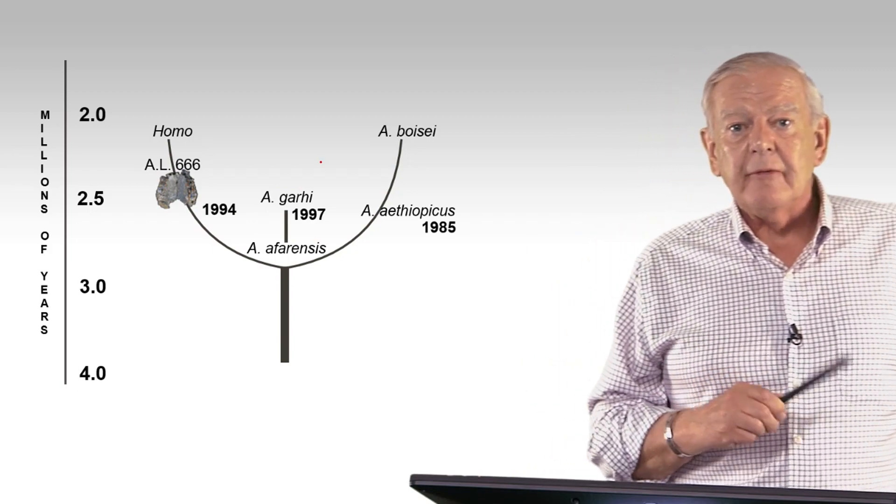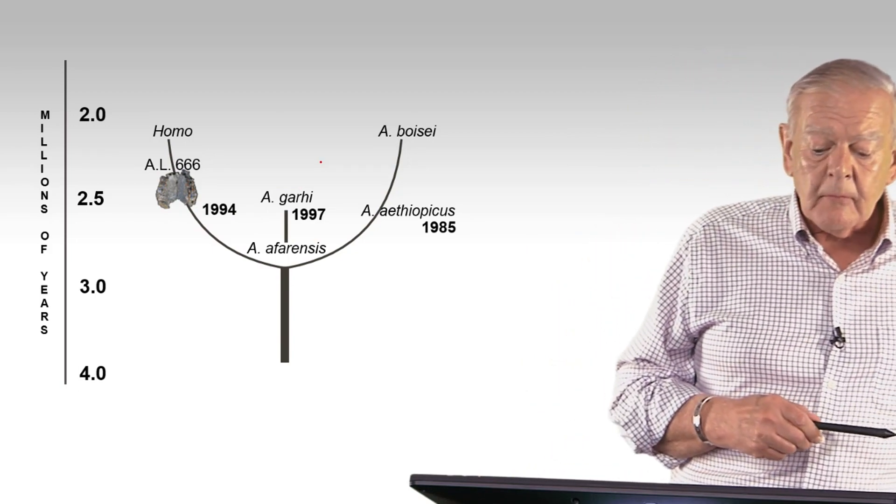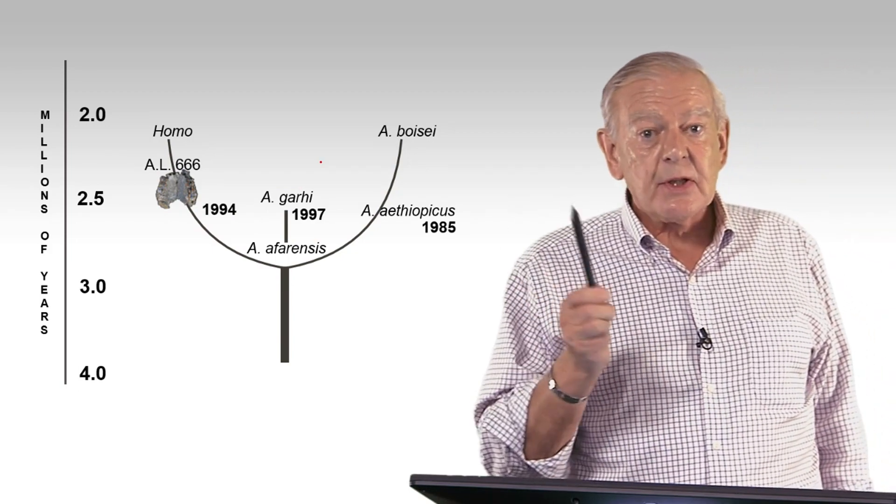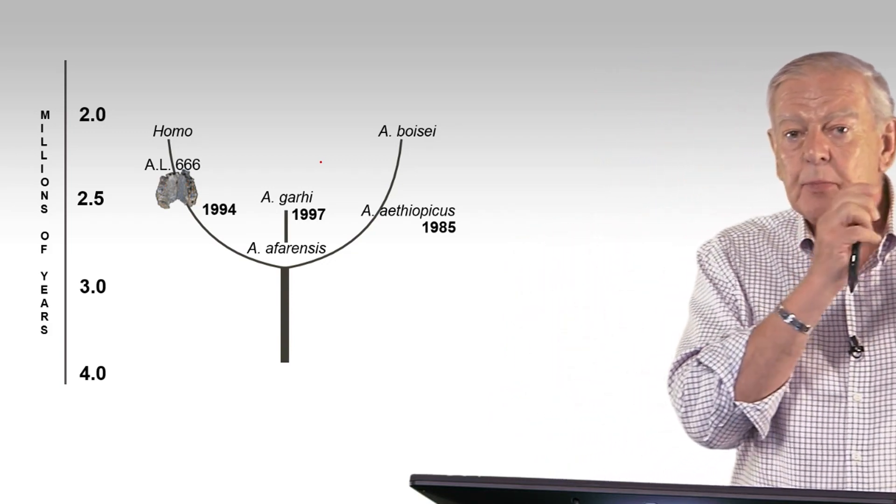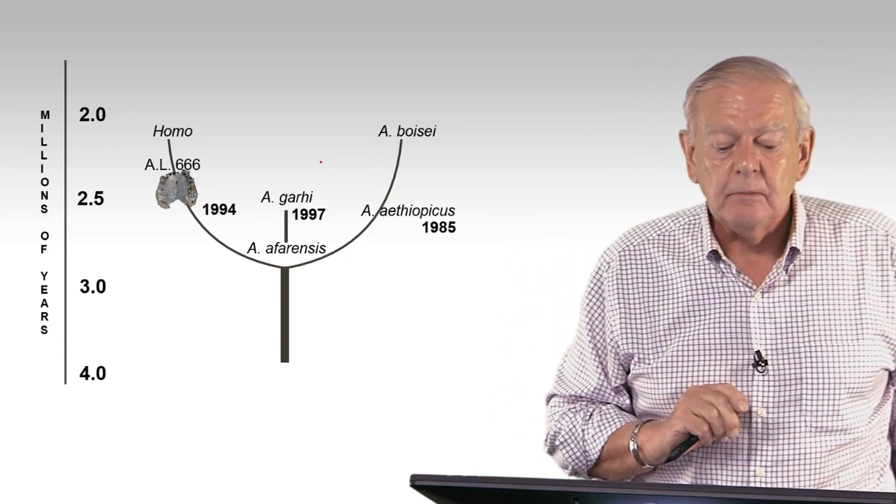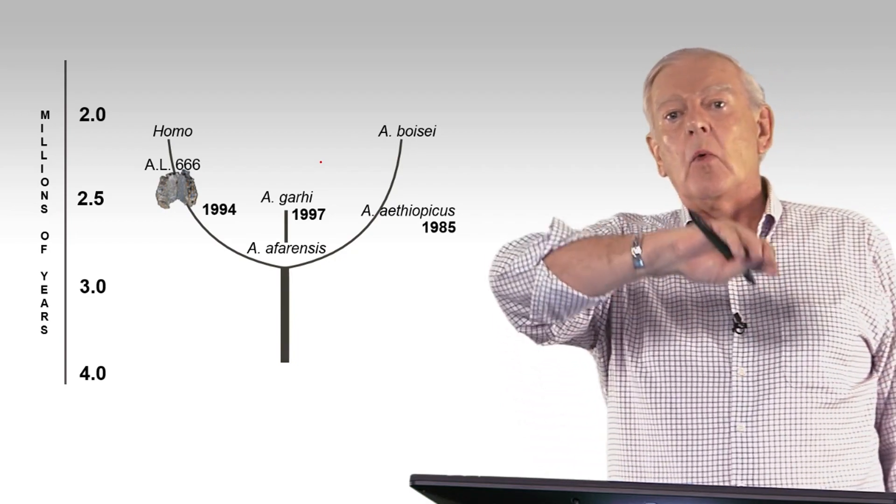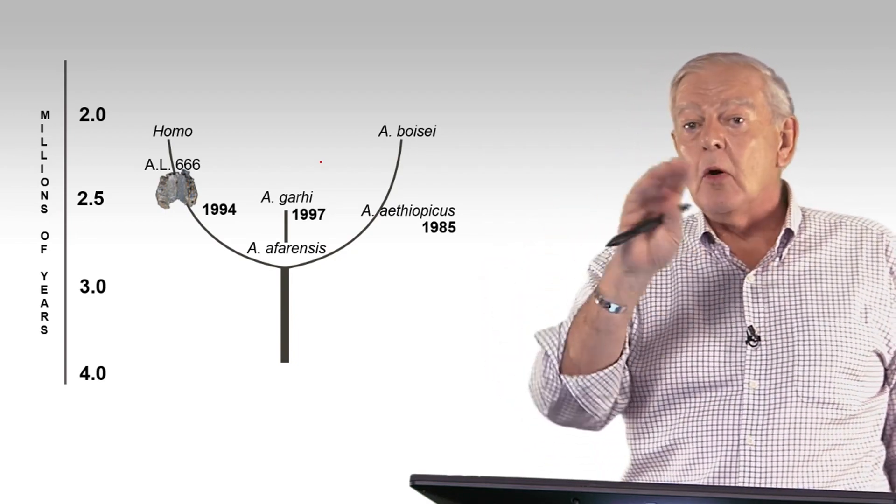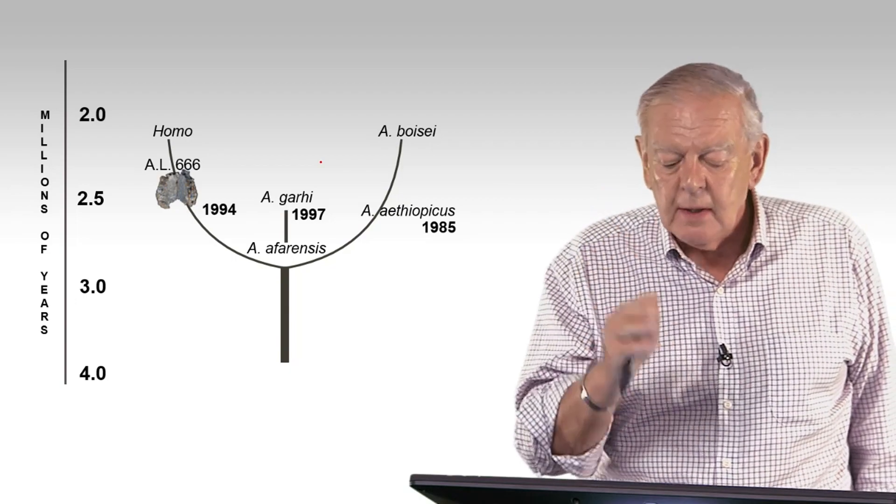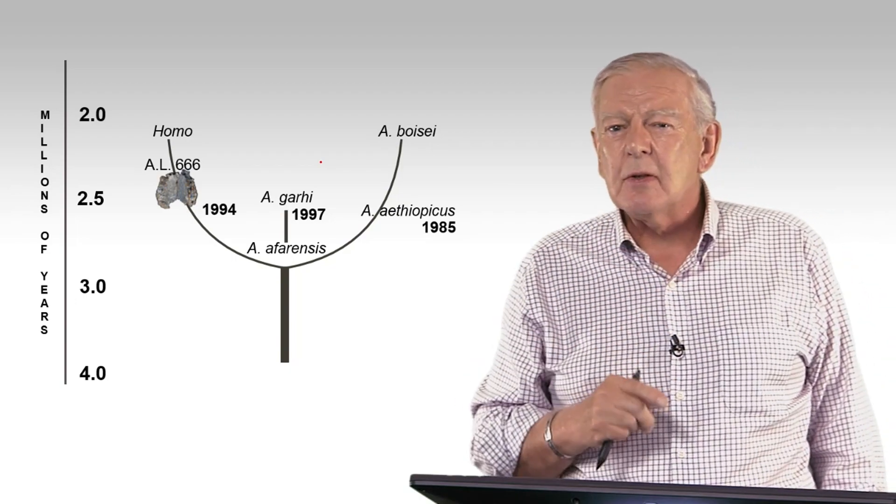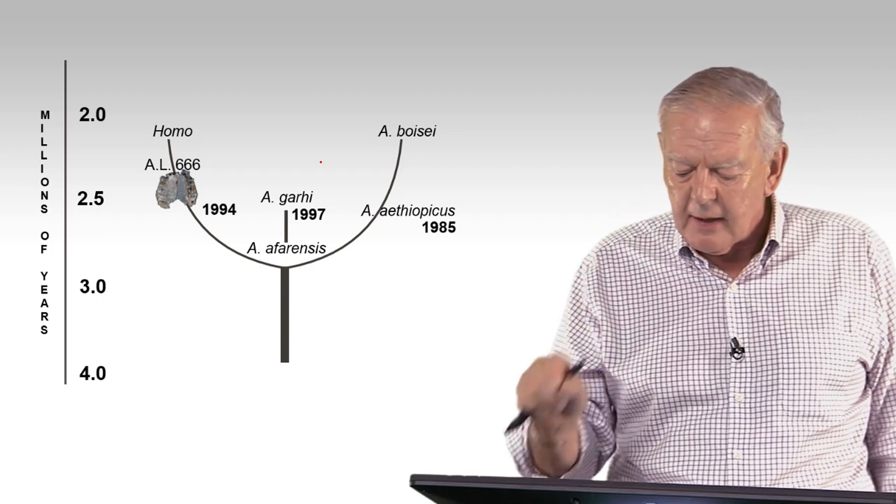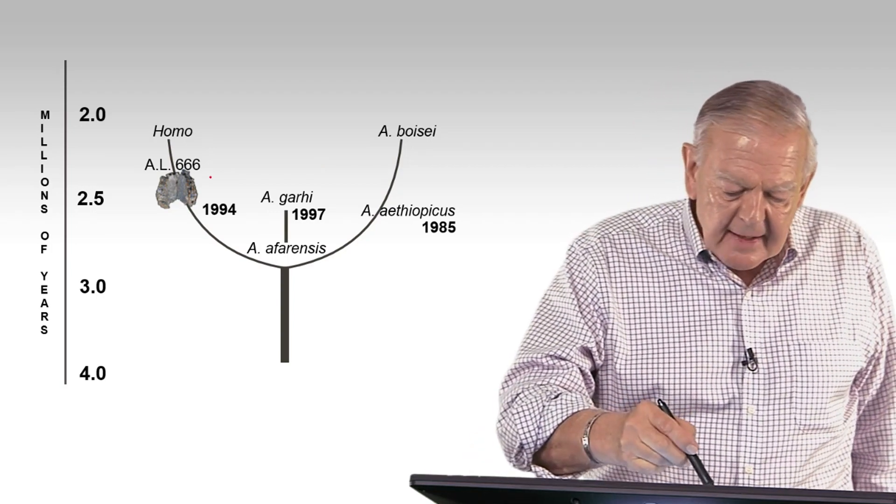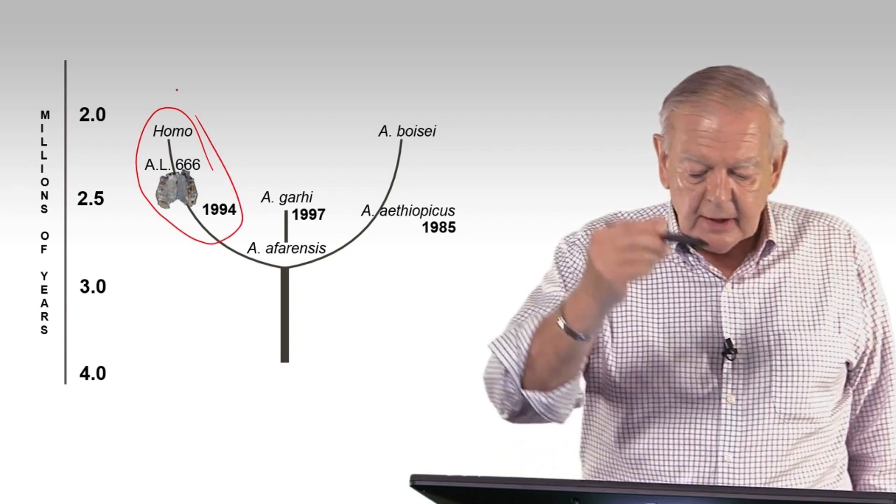Well, then in 1994, we found at the site where Lucy was found, at Hadar, a complete upper jaw or maxilla. And that had the rounded shape to it. It's called Homo Spa. We don't know. It looks like it's probably an ancestor, hopefully an ancestor to Homo habilis, but we're not absolutely certain what was going on there. So that added a little information to the Homo lineage.